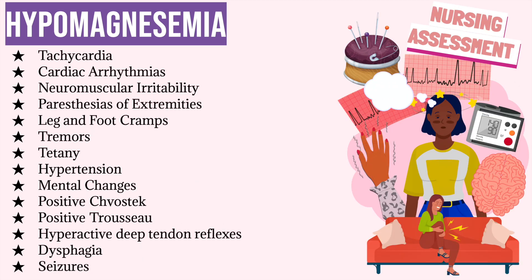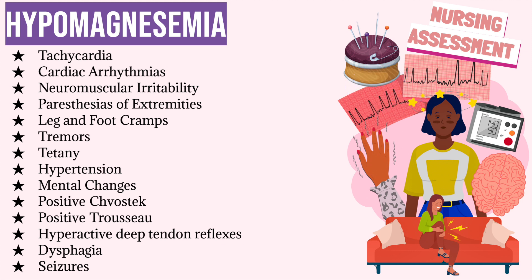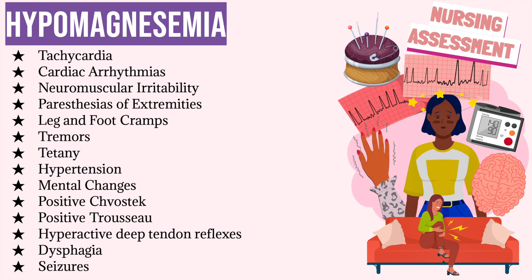Remember that magnesium acts as a sedative. So if there is too little magnesium in the body, this will cause symptoms of excitability such as tachycardia, cardiac arrhythmias, and neuromuscular irritability, which is usually evidenced by a positive Chvostek's or Trousseau's sign. Your patient may complain of pins and needles of the extremities, cramping of the legs and feet, tremors, tetany, altered mental status, hyperactive deep tendon reflexes, dysphagia, or seizures.